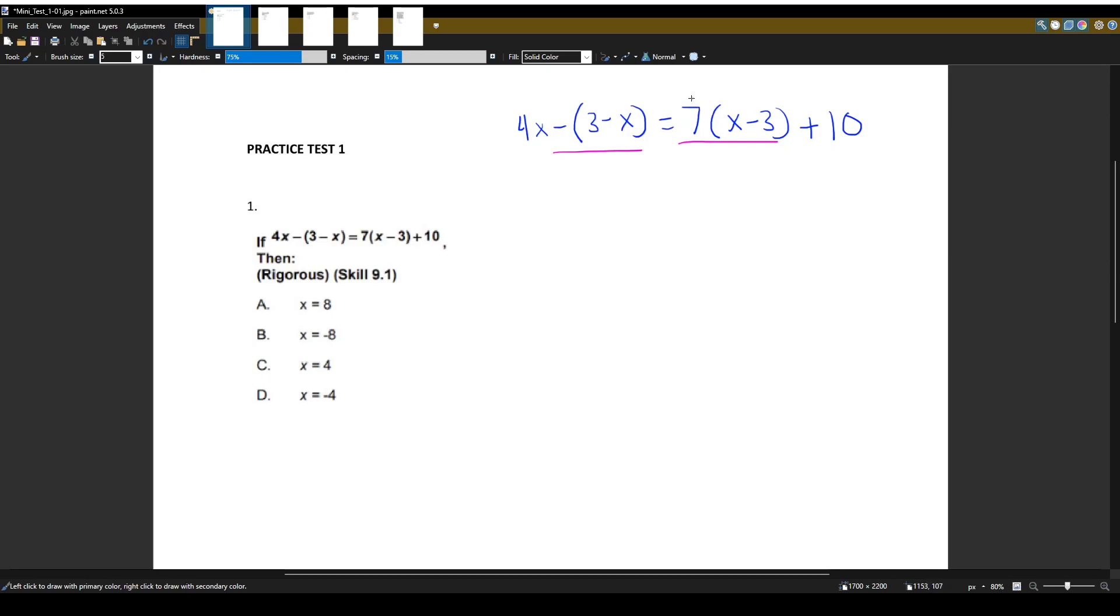So we have a number out in front of the parentheses, here it's 7, and we're going to distribute it into both numbers inside the parentheses. So we'll be doing 7 times x, and 7 times, be careful here, negative 3. And same thing here. What we have here actually is an invisible 1, which we don't write usually. So it's a negative 1 here, you can think of it like that. So we have negative 1 distributing times 3, times negative x.